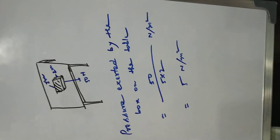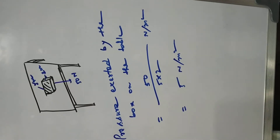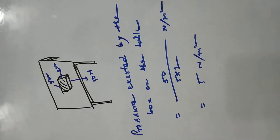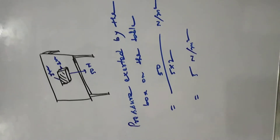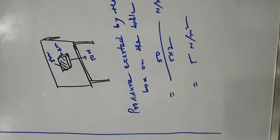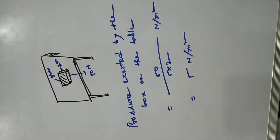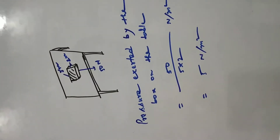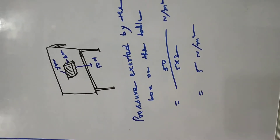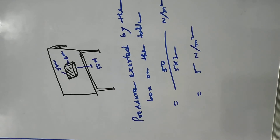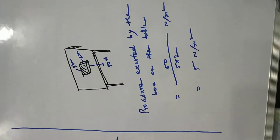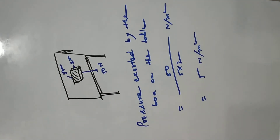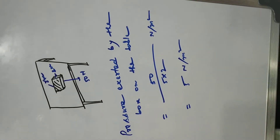The length of the box is 5 meters and it is 2 meters wide, so the area of contact between the table and the box is 5 × 2 = 10 meter square. Therefore, the pressure exerted by the box on the table is 50 divided by 10, which equals 5 newton per meter square, or 5 pascal. This is how you solve numerical problems related to pressure.